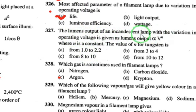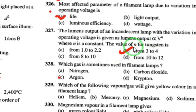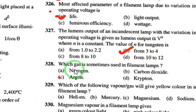The lumens output of an incandescent lamp with variation in operating voltage is given as: lumens output ∝ V^n, where n is a constant. For tungsten, the value of n is 3 to 4.